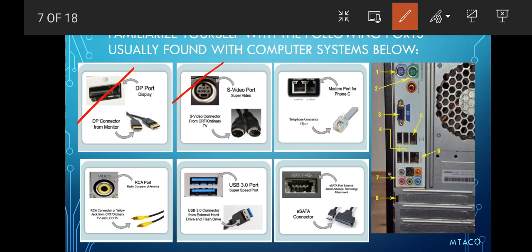Next is your RJ11 port, which is a telephone connector. For modern connections, there is also your RCA port — Radio Corporation of America port. This port or connector serves as your yellow jack and is used to connect a CRT, ordinary TV, or LCD TV for video. You may recognize the three connectors: red, white, and yellow — the yellow is your RCA video connector.